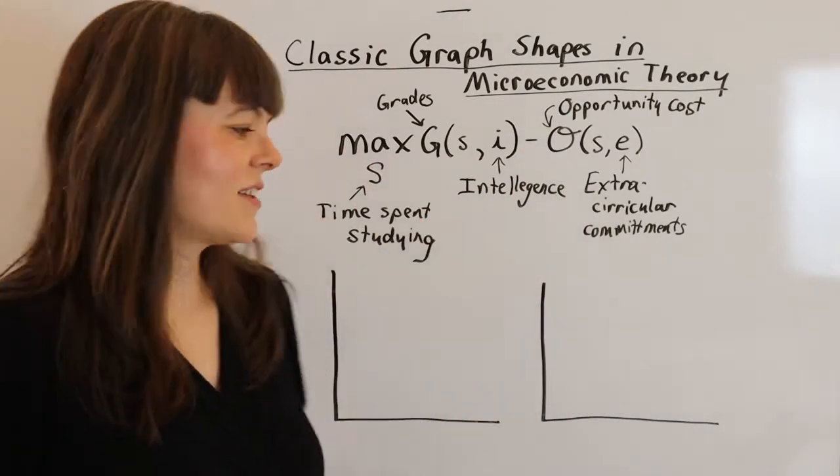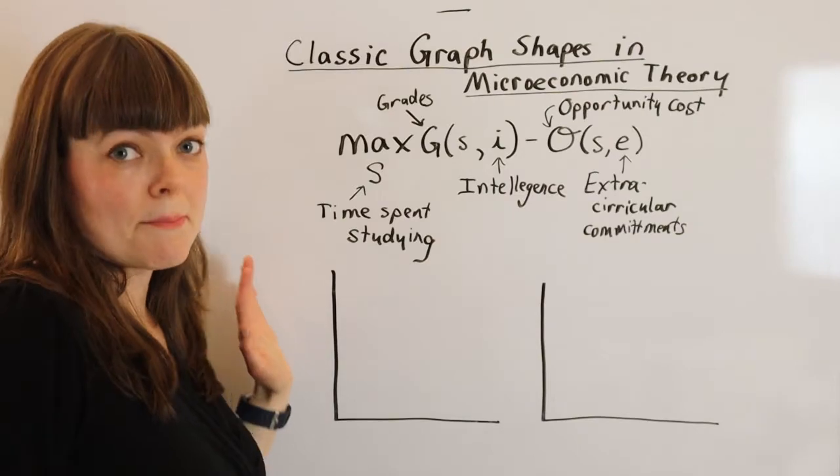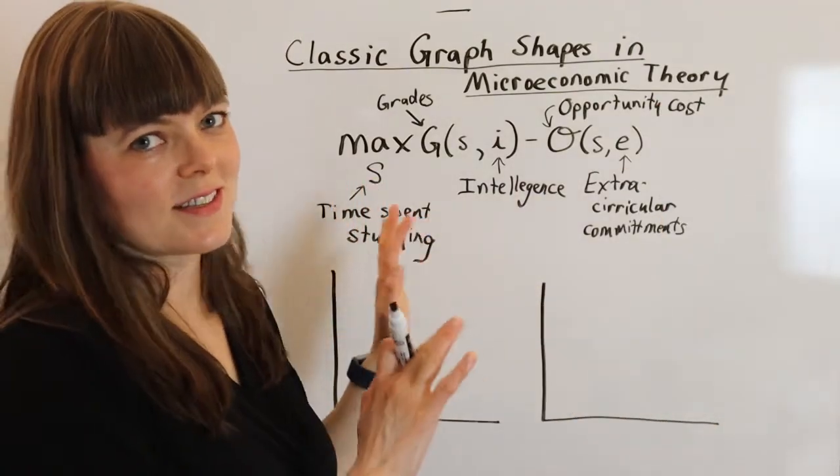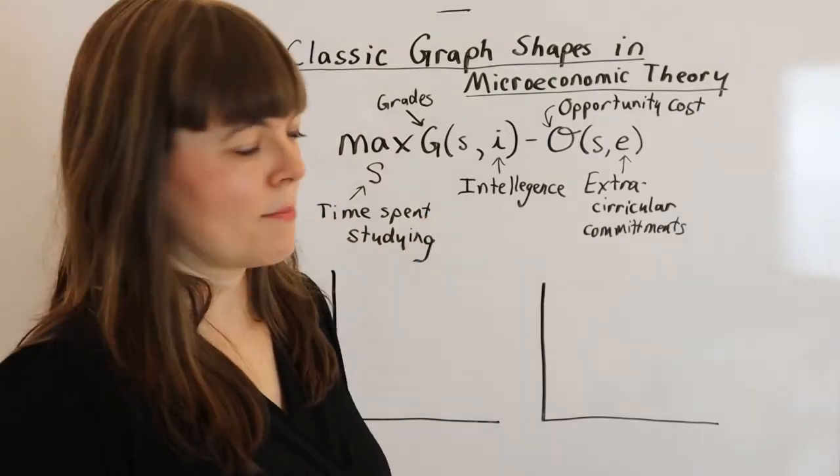So classic shapes are going to be diminishing marginal benefit and increasing marginal cost. And we'll see if these fit those classic shapes.